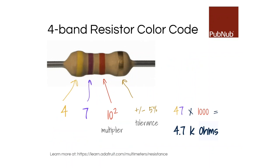When looking at a resistor, it has color bands — either four or five bands. For a four-band example: the first color is yellow (= 4), next is purple (= 7), the third band is a multiplier — red means 10^2 = 100 — and the last band is tolerance. So it's 47 × 100 = 4,700 ohms, or 4.7K ohms.